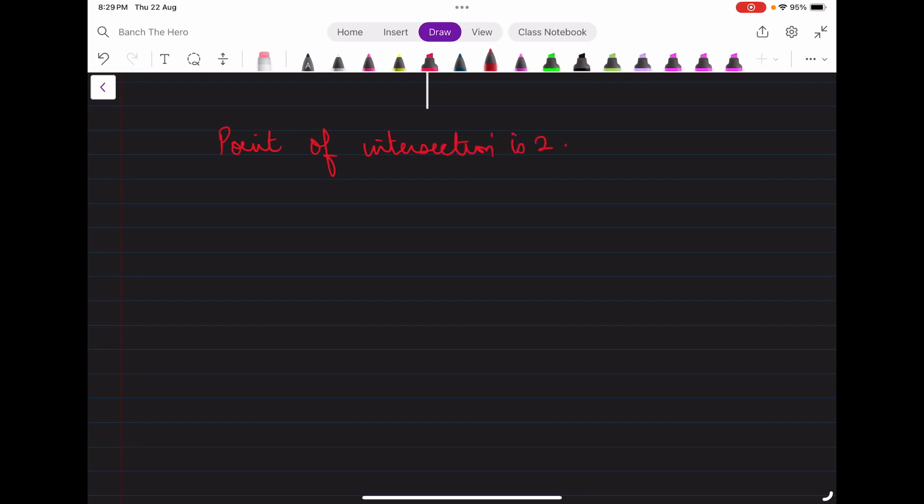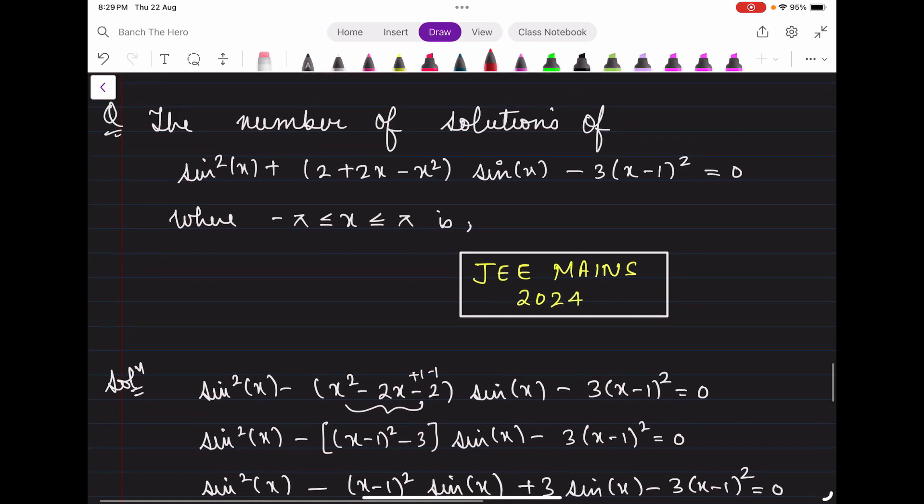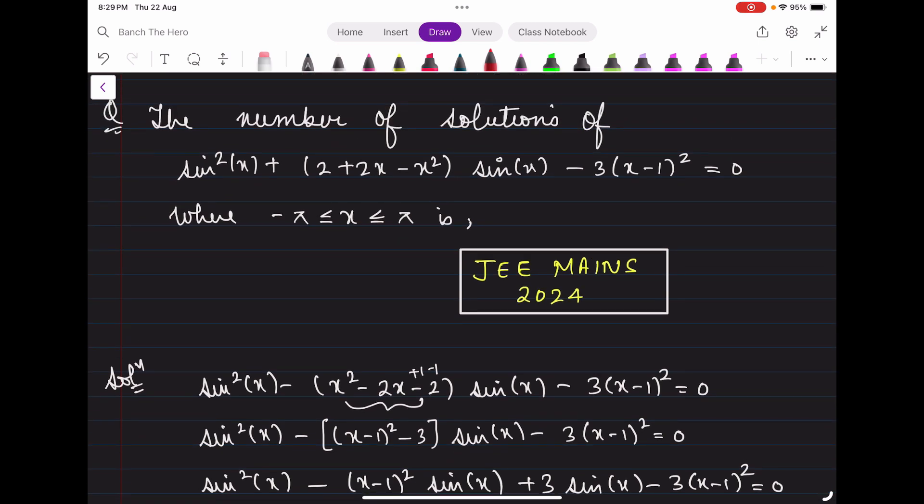Therefore the answer for this particular question, which was a numerical answer type that came in JEE Mains 2024, is 2. I hope you have understood this video lecture. For more such videos, do subscribe to our YouTube channel and do not forget to press the bell icon. Thank you so much.